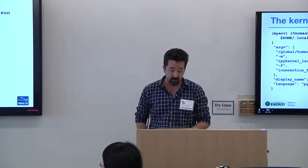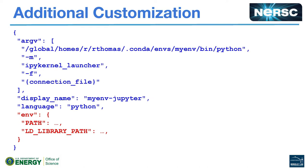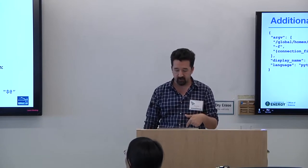The kernel spec file is just JSON — basically it takes an argument to run Python, launch the kernel, and some connection file stuff. You can do more than just this with it: you can customize the environment by adding an environment stanza to set PATH, LD_LIBRARY_PATH, and similar variables. The way I prefer to do customization — like loading a module — is to not run Python directly, but instead run a shell script that wrappers Python. You change the kernel spec file so that the first argument runs a shell script, and inside that script you set whatever exports you want.